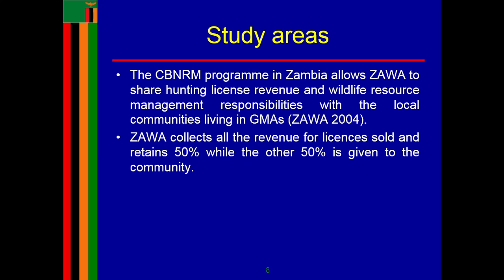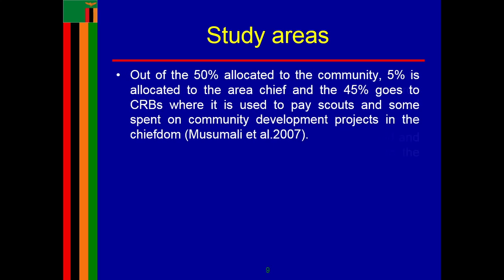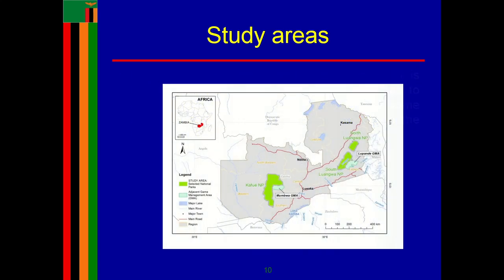The CBNRM program in Zambia allows ZAWA to share hunting licence revenues and wildlife resource management responsibilities with the local communities in the GMAs. ZAWA collects all revenues for licences sold and retains 50 percent, while the other 50 percent is given to the community, shared between the chief and community development. Mumbwa is near Kafue National Park and Lupande is next to North and South Luangwa National Park.